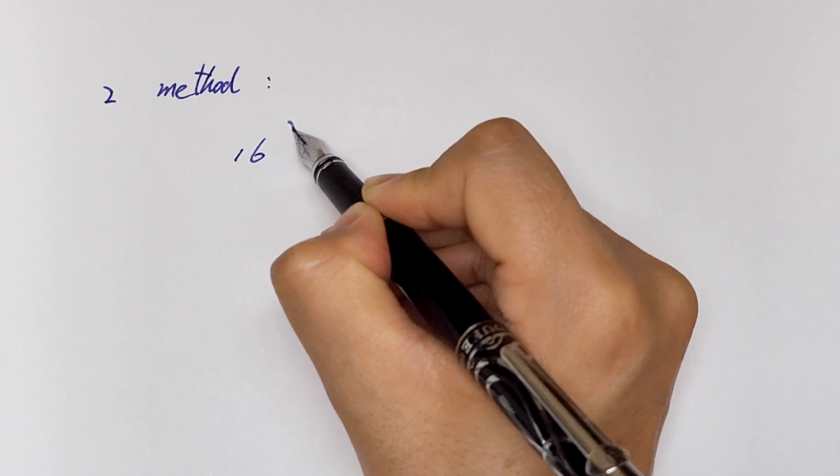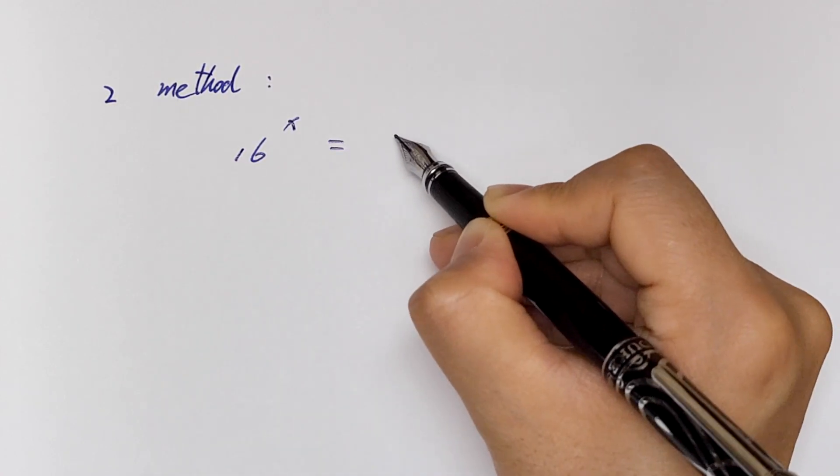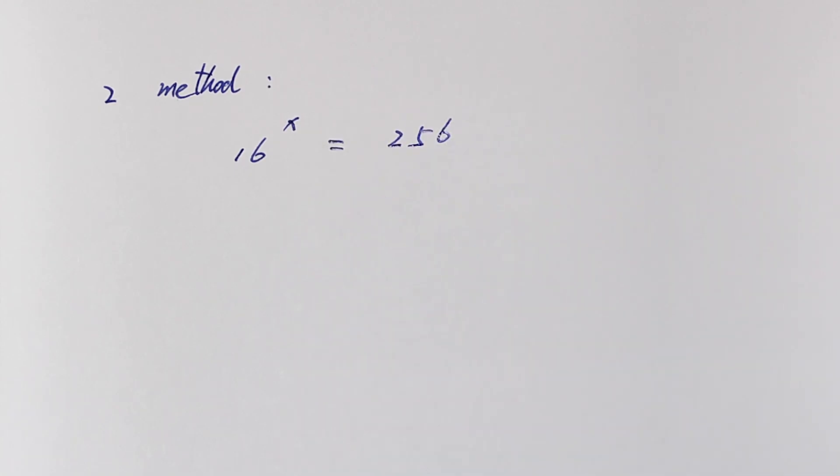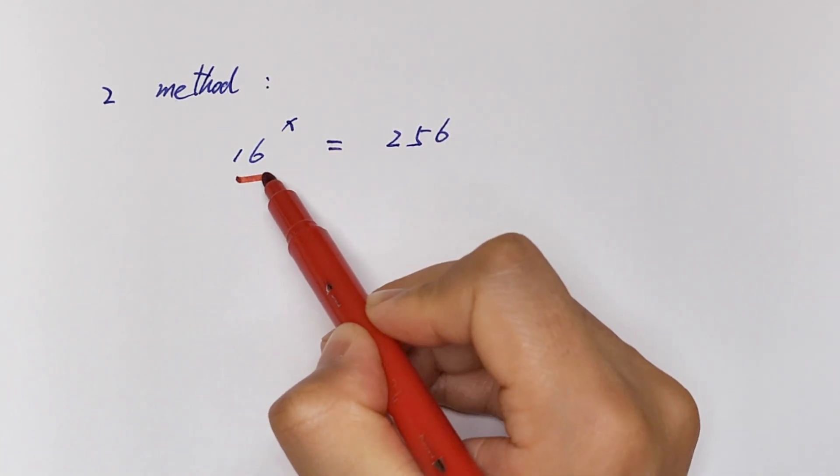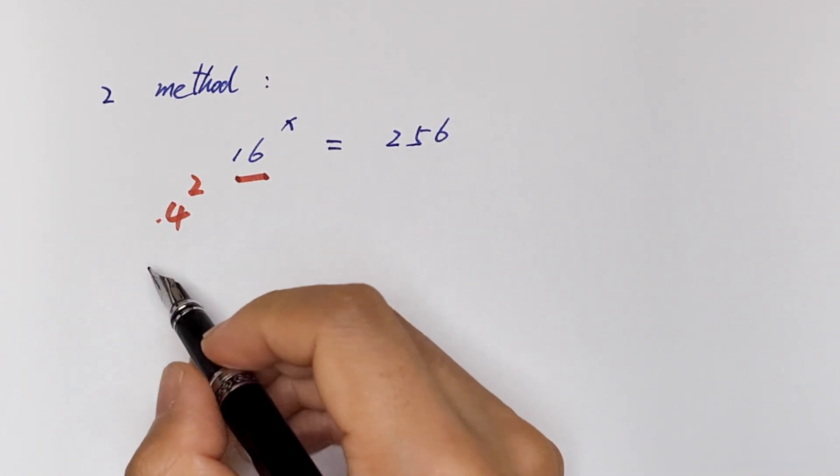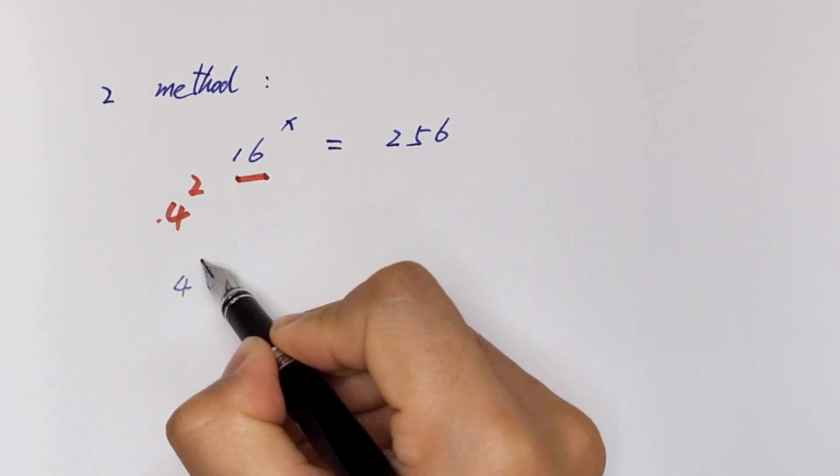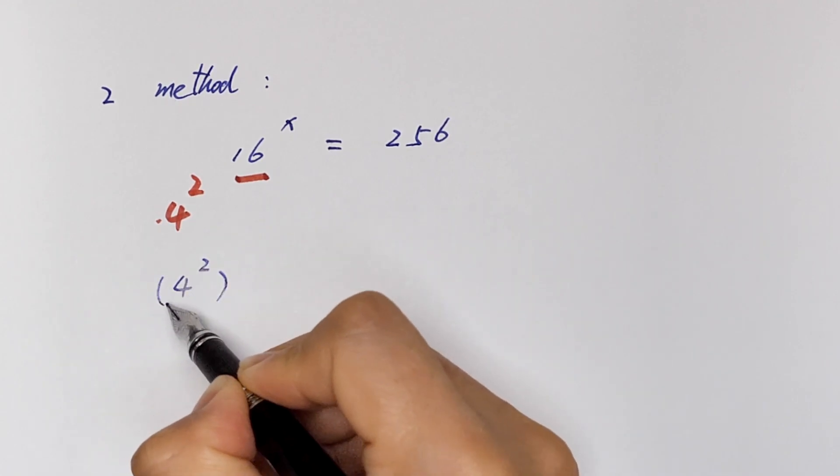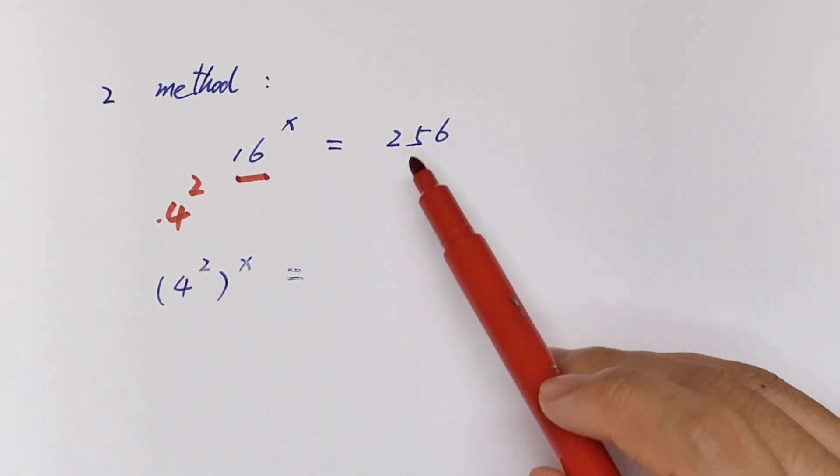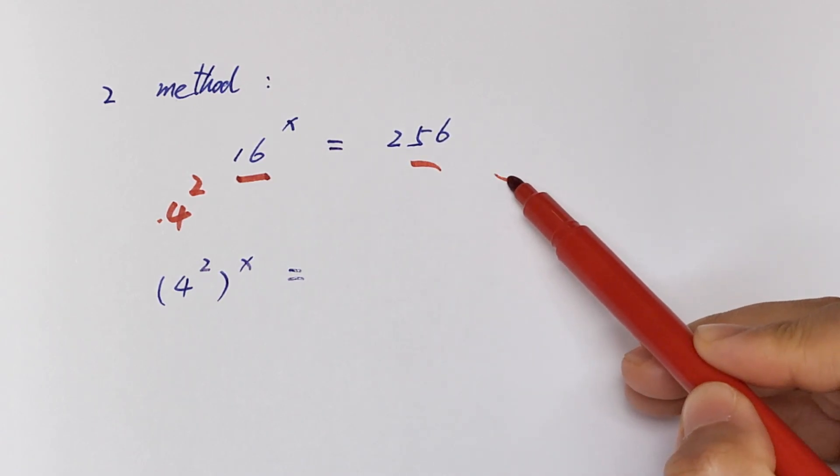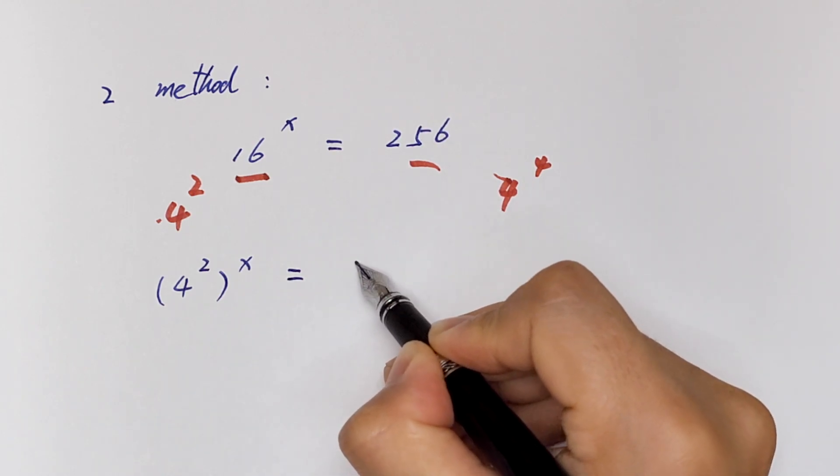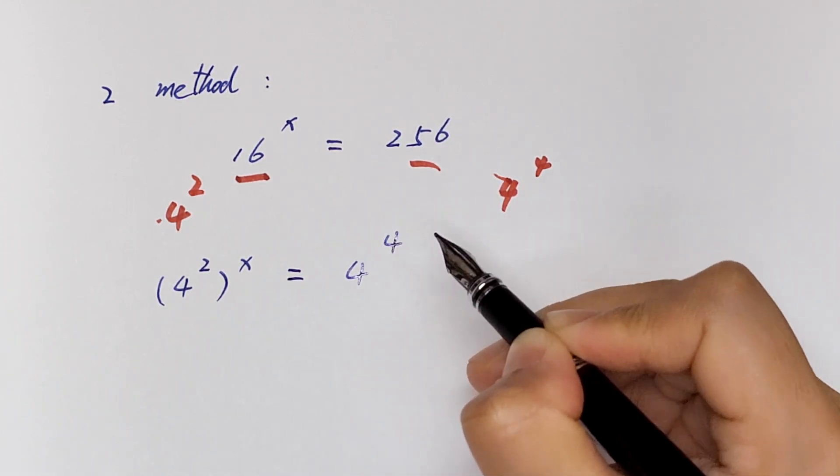16 to the power x is equal to 256. Because 16 is same as 4 squared, it will be 4 squared to the power x. And 256 is same as 4 to the power 4, so we have 4 squared to the power x is equal to 4 to the power 4.